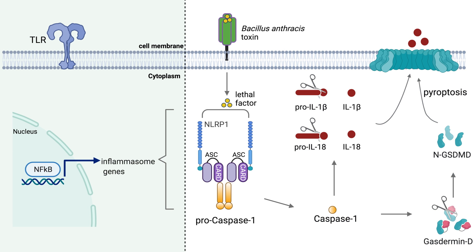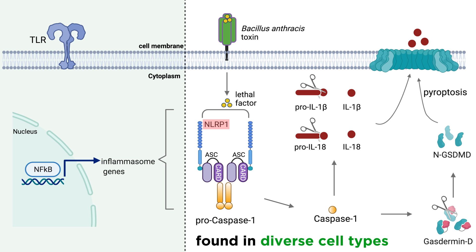Now that we've discussed the general principles of inflammasome activity, let's talk about a few specific inflammasomes. Many of these inflammasomes belong to the NLR family of pattern recognition receptors. NLRP1 seems to be found in more diverse cell types than some of the other inflammasomes, as it can be found in adaptive immune cells and even non-immune cells, in addition to innate immune cells.